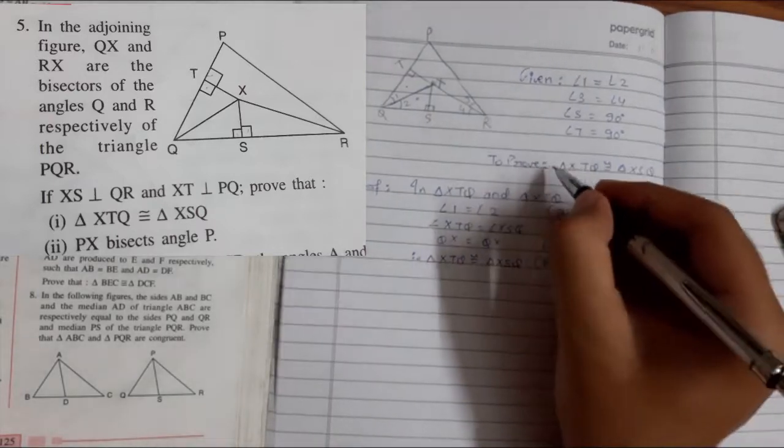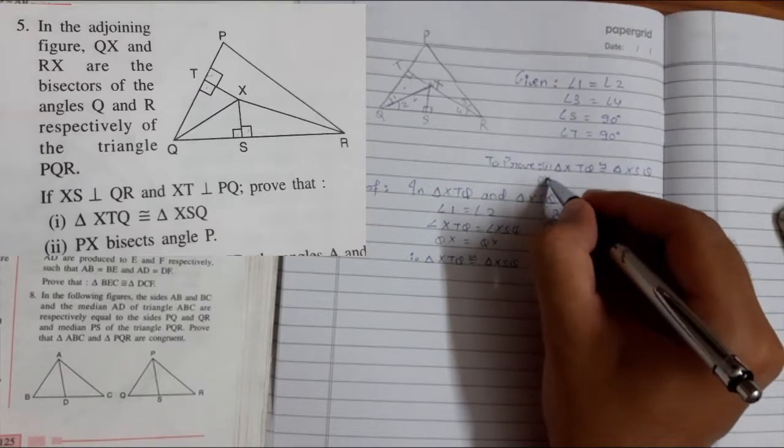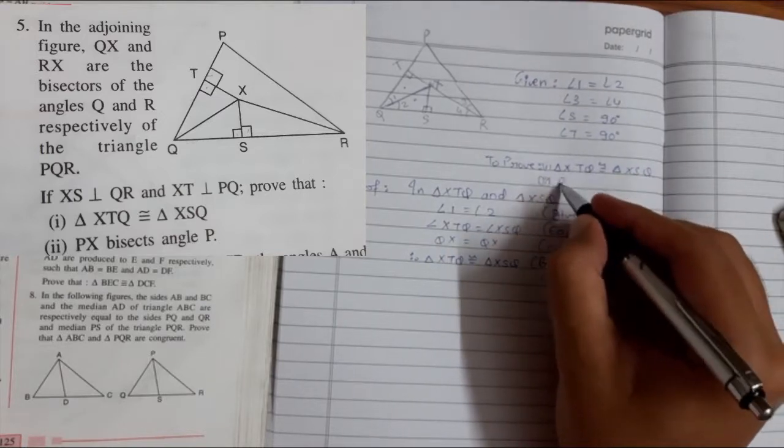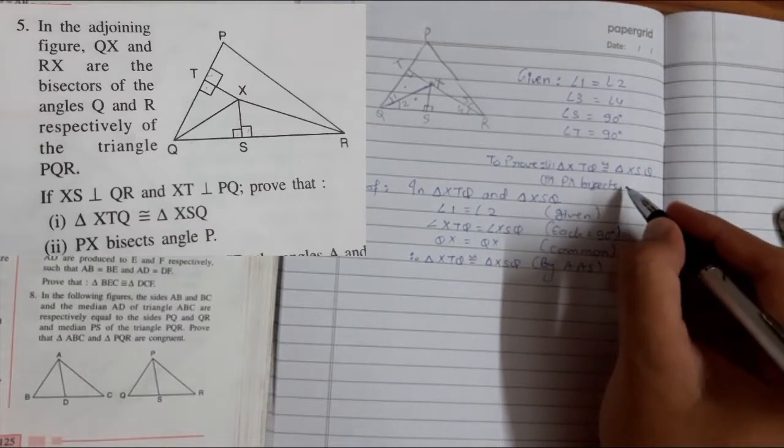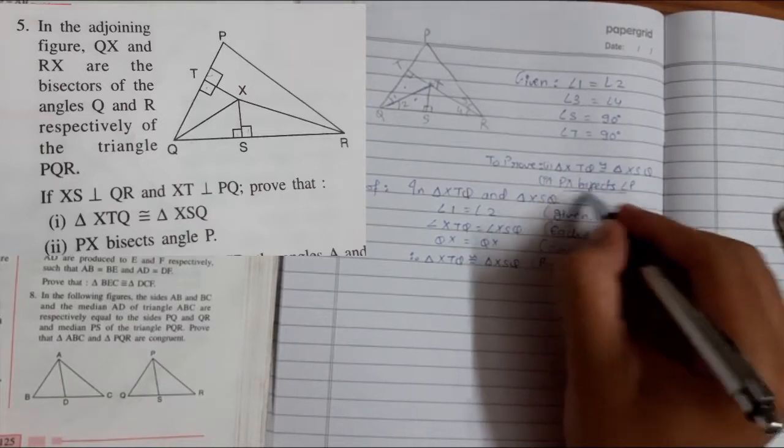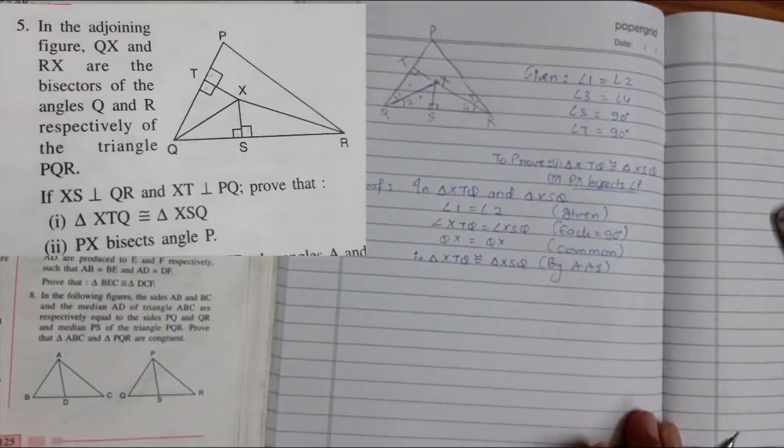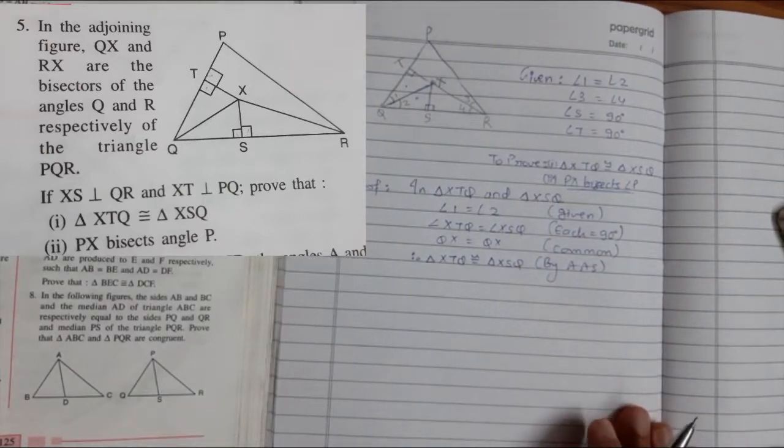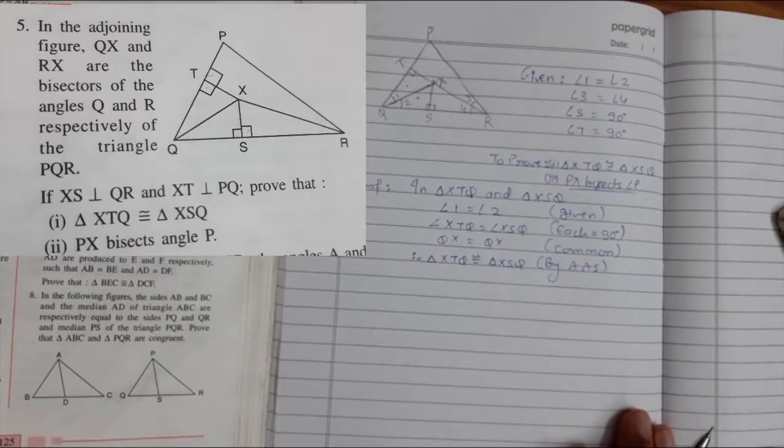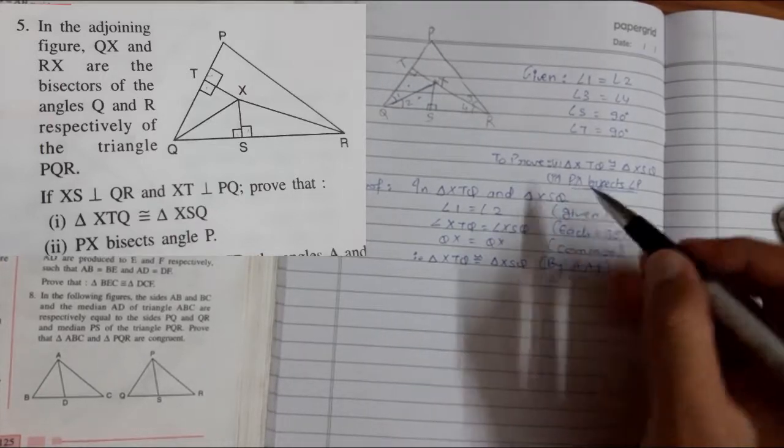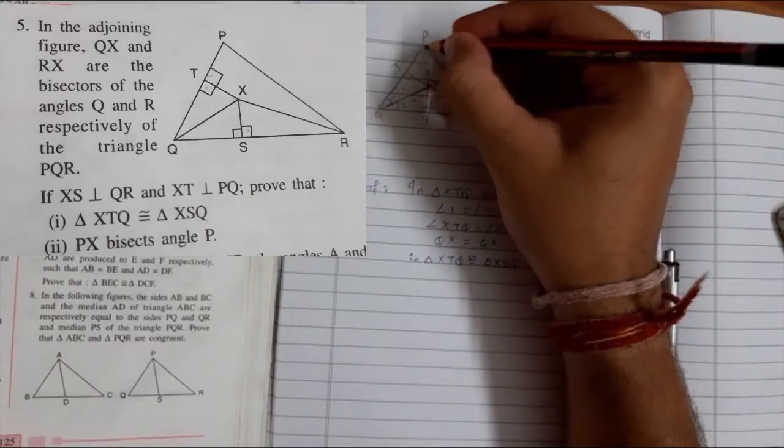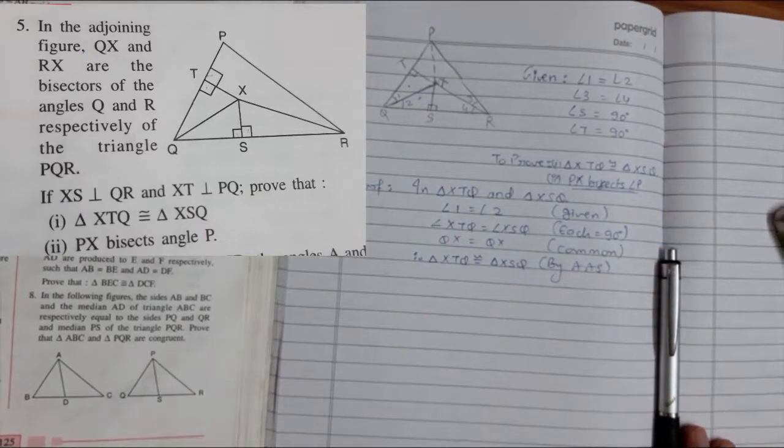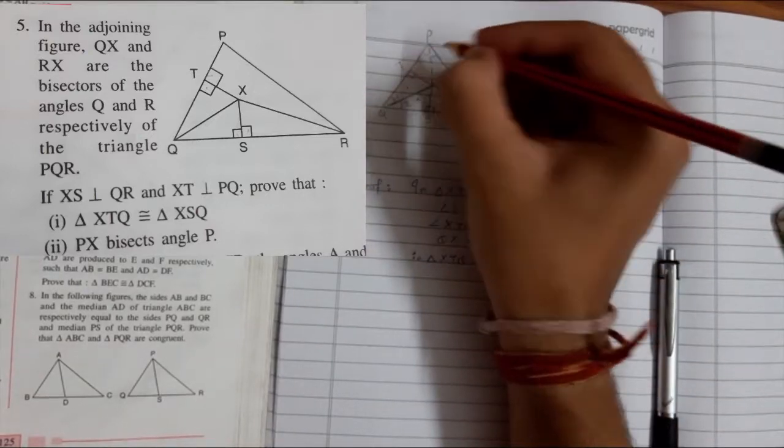So there was another part. This was the first thing that needed to be congruent. Another part is PX bisects angle P. We don't understand anything from this. We have to interpret this thing in mathematical terms. Just now we discussed what does bisect mean. Bisect means dividing into two equal parts. So they are asking that PX, first of all we have to join PX like this. PX is bisecting angle P, that means it has been bisected.